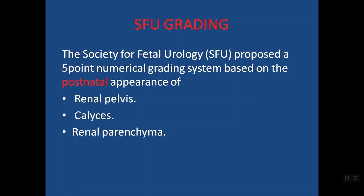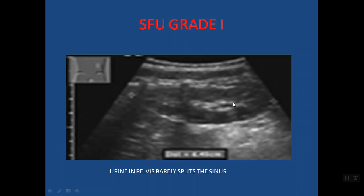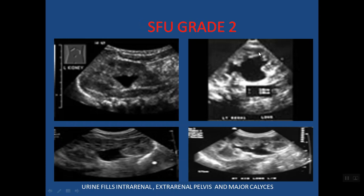So that covers antenatal — on obstetric ultrasound you grade hydronephrosis based on anteroposterior dimension, and the limitation is it does not account for renal parenchymal effects. It's a nice way to standardize things by keeping it basic. But once the baby is born, you have to do something more detailed than just APD.